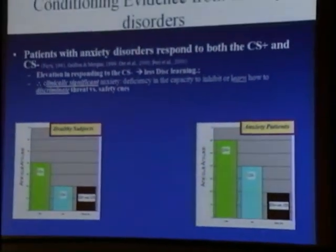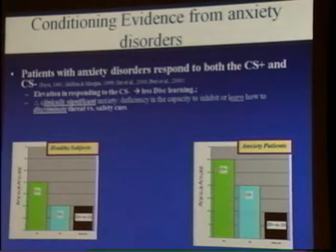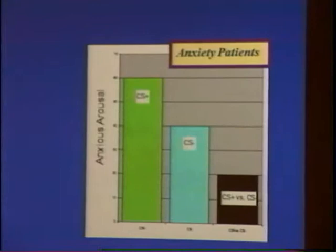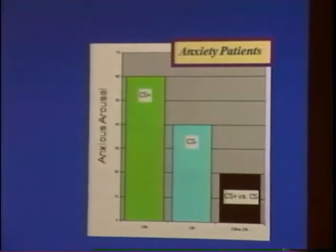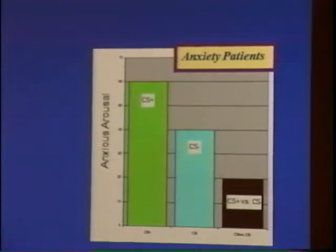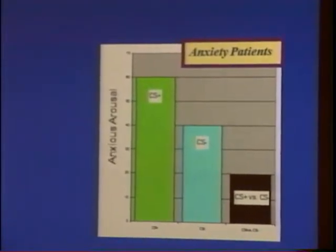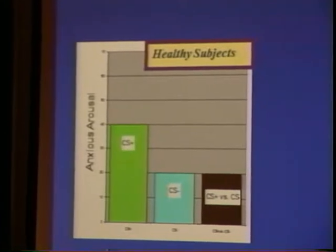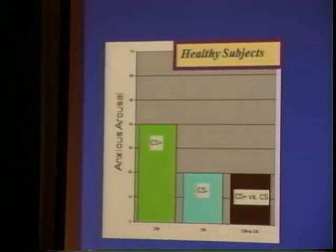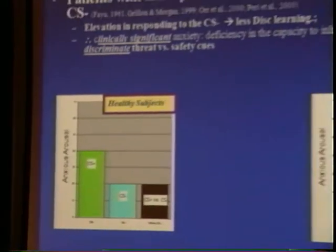They find no difference between patients with anxiety and controls in terms of discriminative paradigms. On the right, you see anxiety patients in terms of their response to both a CS plus — the presence of a shock — and the CS minus, which is the absence of the shock. What you can see is that anxiety patients show an elevated arousal response, likely skin conductance, to both the CS plus and the CS minus. Whereas healthy subjects show a significantly elevated response to CS plus but not to CS minus.